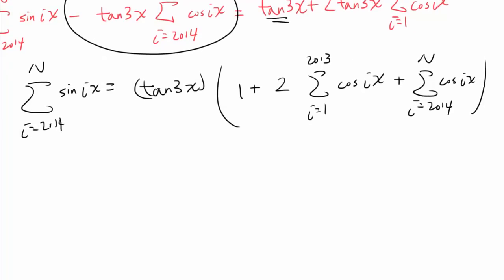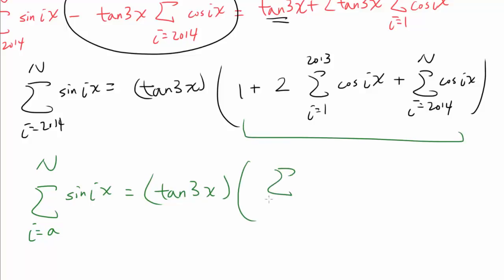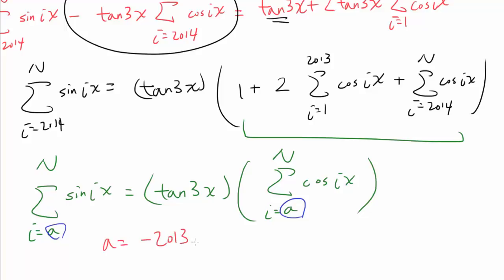Here I want to pause and give you a pop quiz. It turns out we can introduce a powerful, charming symmetry into this equation. More specifically, the summation from i equals some A to n of sine of ix divided by the summation from i equals A to n of cosine of ix simplifies elegantly. What is this A? If you said A equals negative 2013, you are right.